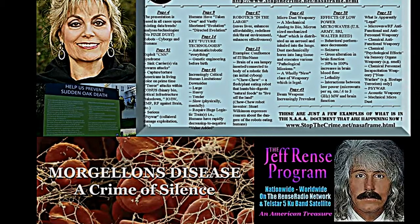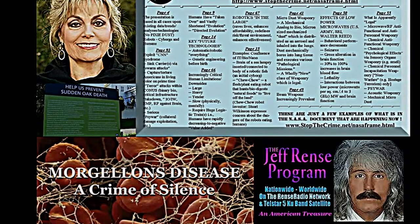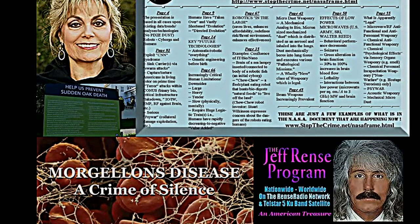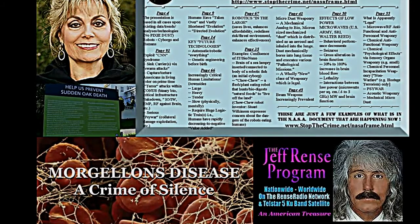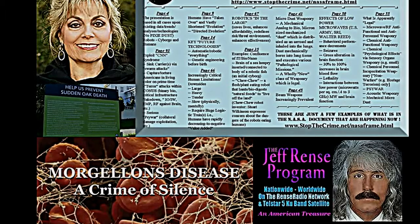On page 8: the silent weapon is a type of biological warfare. It attacks the vitality, options, and mobility of the individuals of a society by knowing, understanding, manipulating, and attacking their sources of natural and social energy and their physical, mental, and emotional strengths and weaknesses. And Rothschild discovered the basic principles of power, influence, and control over the people — he applied this to economics — and this is discussed on page 9.